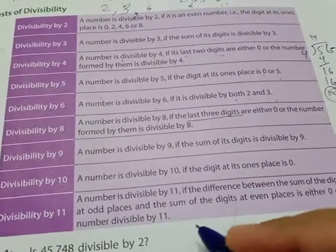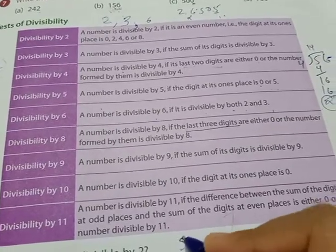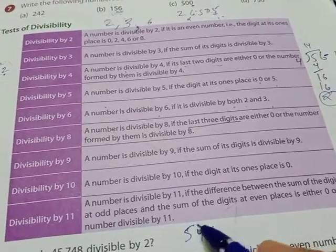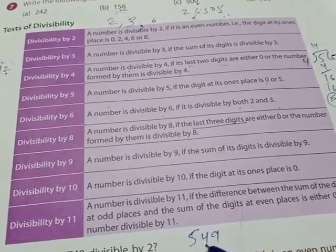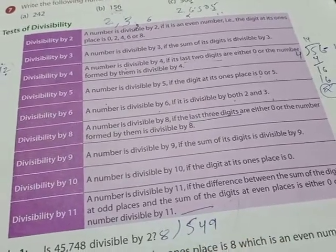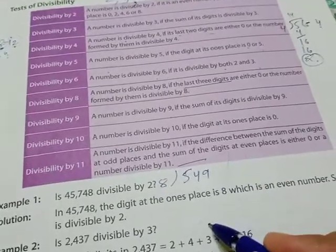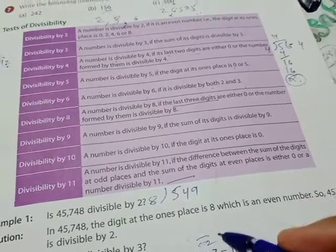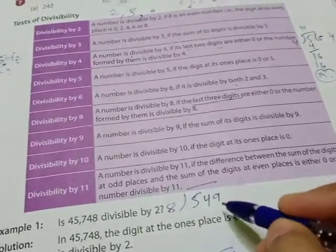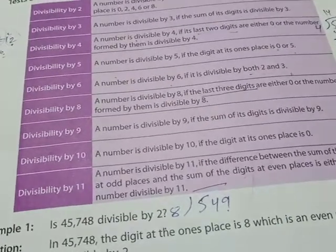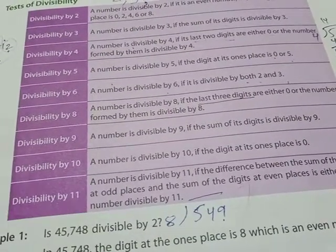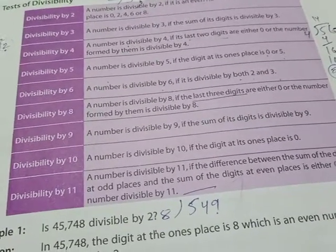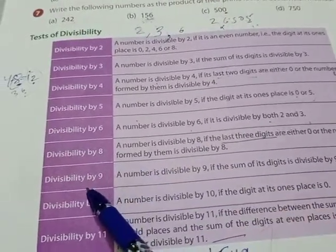For example, take the number 549. To check if 8 is its factor, divide 549 by 8. If you get a remainder, then 8 is not the factor. If there is no remainder, then 8 is its factor. We divide all three digits by 8, and if no remainder is left, then 8 is also its factor.